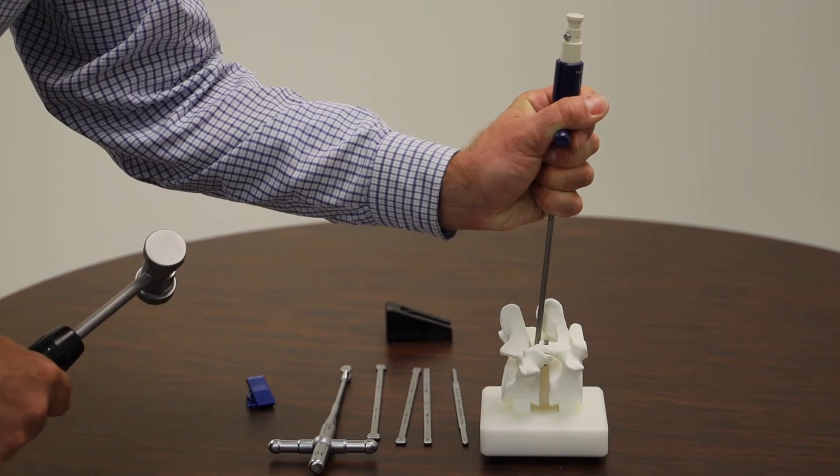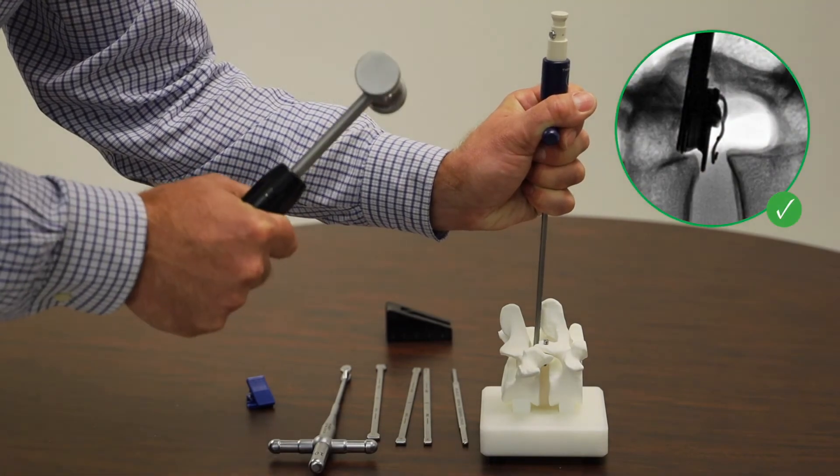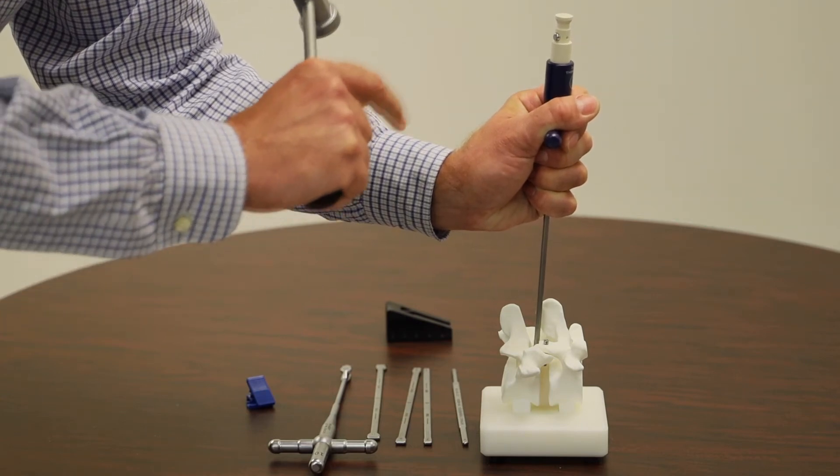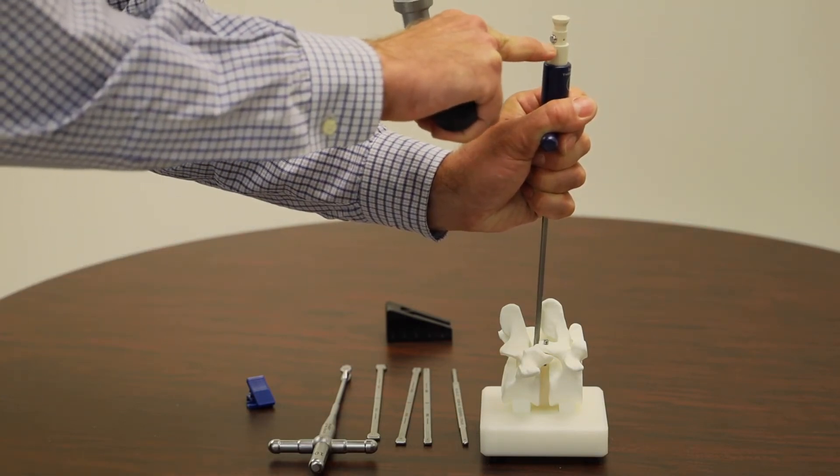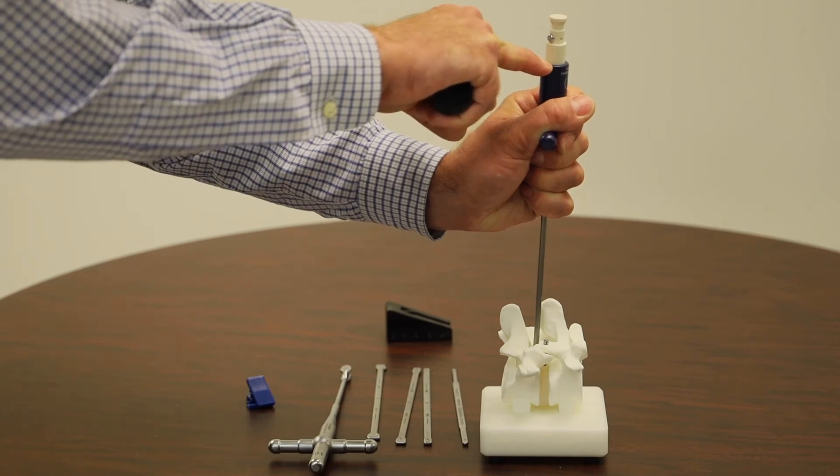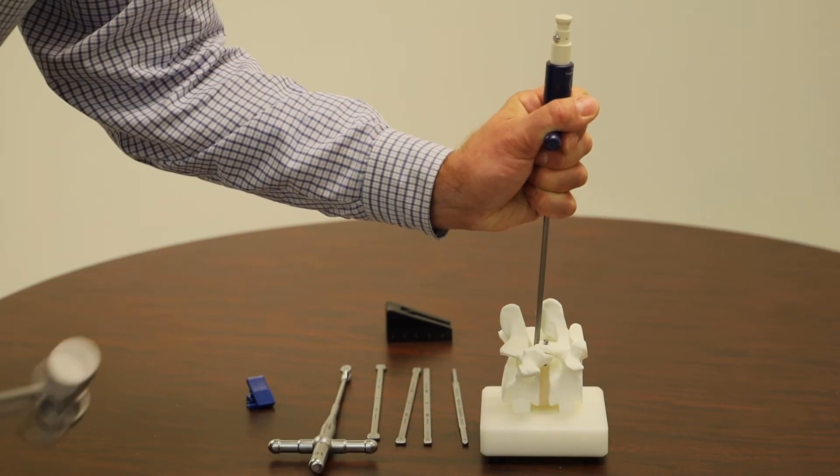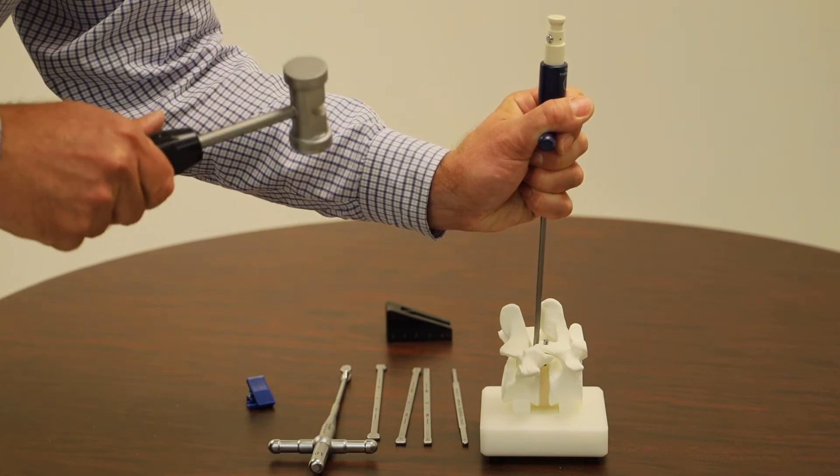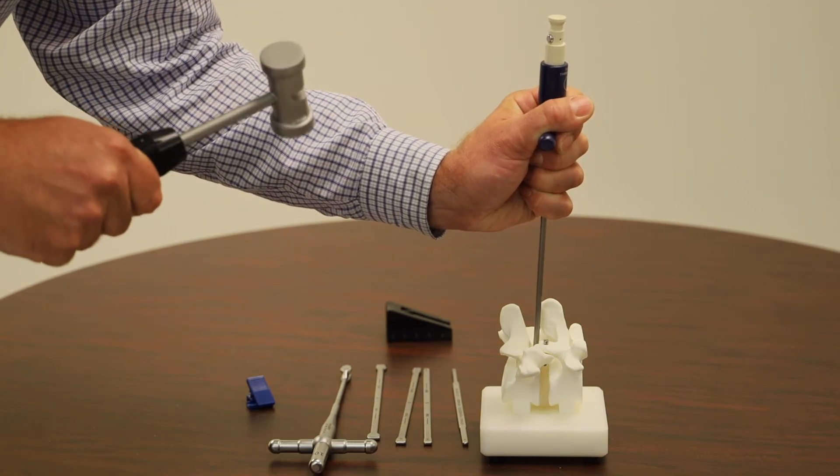Again, you want to take the last image with the mallet in your hand. When hammering, your goal is to get the ledge on the strike cap down to the top of the blue delivery sheets. Everyone's bone is different, so you want to start with lighter taps of the hammer and keep increasing the force until the strike cap advances.